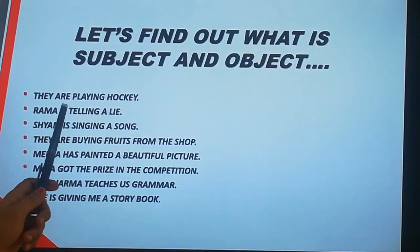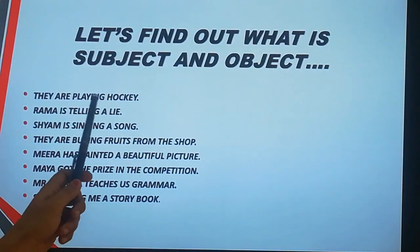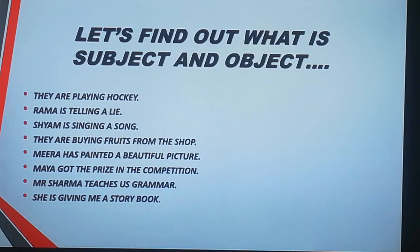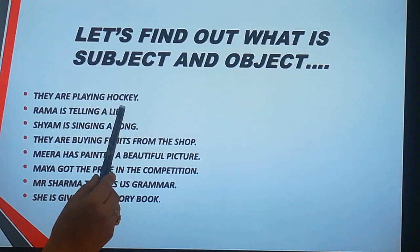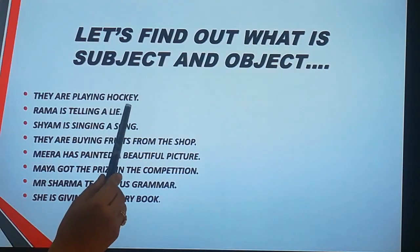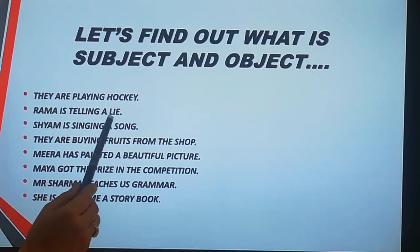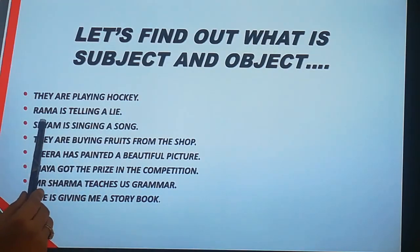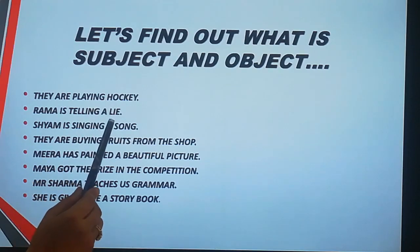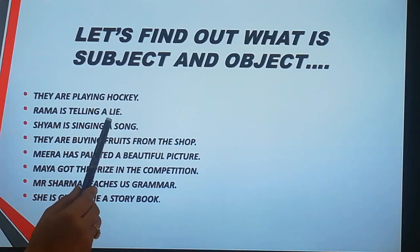In the first one, they are playing hockey. Who are playing? They. So 'they' is subject. What are they playing? They are playing hockey. So hockey is direct object. Ram is telling a lie. Who is telling a lie? Ram. Ram is our subject. What is he telling? A lie. A lie is a direct object.